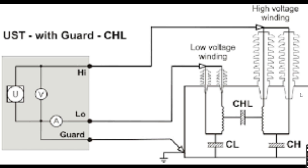In USTG mode, the guard cable of the kit is connected to the insulator flange of the CVT so that the leakage current flowing over the surface of the CVT should not be counted for the measurement of tan delta.